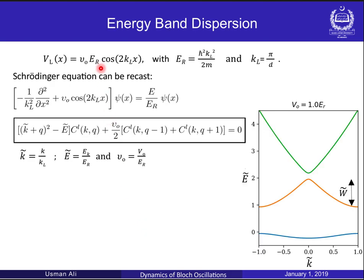Considering the periodic potential to be a simple cosine with amplitude scaled through the relevant energy scale, the Schrödinger equation can be recast into a scaled differential equation which, through a similar procedure, reduces to a difference equation.